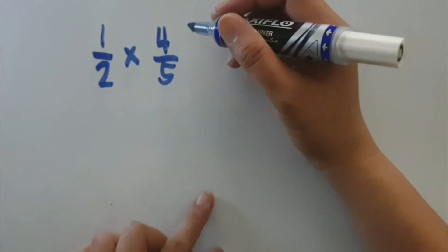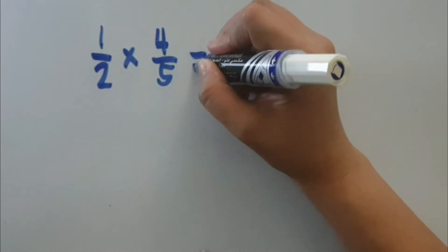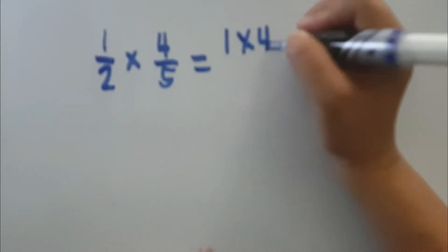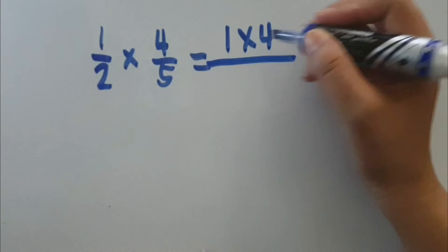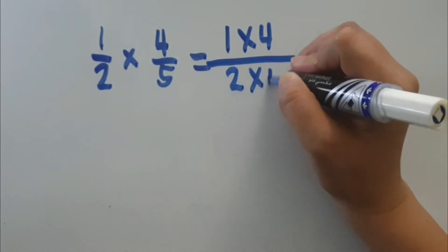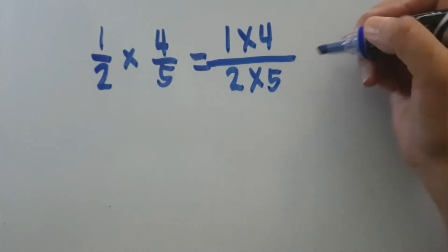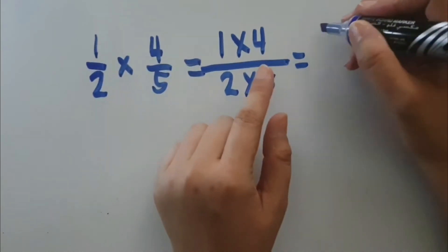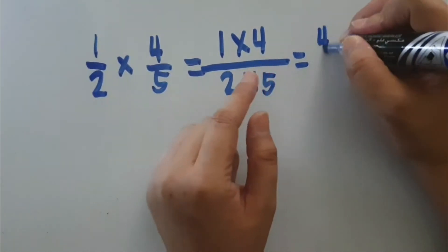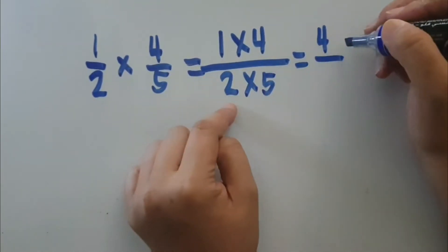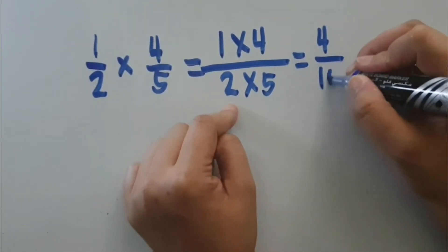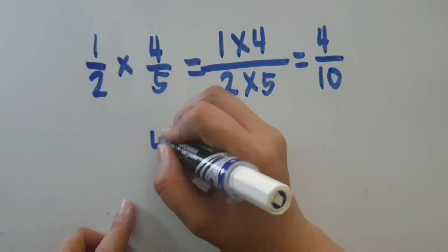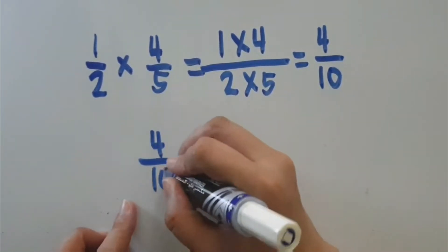To multiply fractions, just multiply their numerators and multiply their denominators. So, multiplying the numerators will give us 4, and multiplying the denominators will give us 10. Now we have 4 over 10.